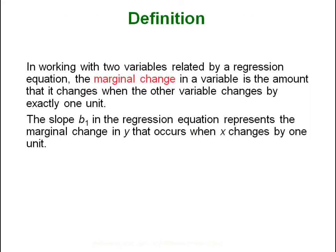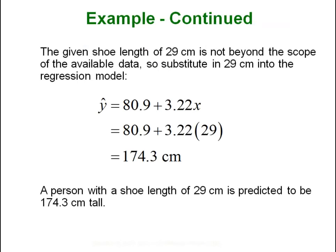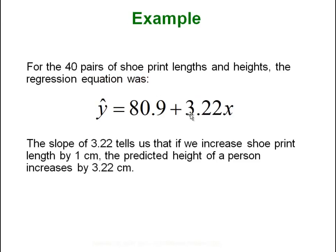Now, beyond the basics of regression: when you are working with two variables related by a regression equation, you get something called the marginal change. The marginal change in a variable is the amount it changes when the other variable changes by exactly one unit. Normally we talk about the marginal change in y, the output — in that case the slope becomes the marginal change. For instance, if the slope is 3.22, every time x increases by one unit the output goes up by 3.22. So 3.22 is the marginal change for this example.